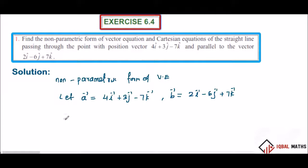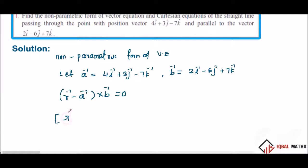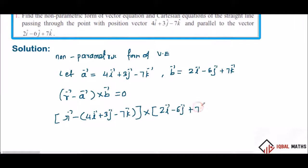Now applying the equation, the formula is r vector minus a vector, cross b vector, equals zero. So r minus the vector 4i plus 3j minus 7k, cross the vector 2i minus 6j plus 7k, equals zero.